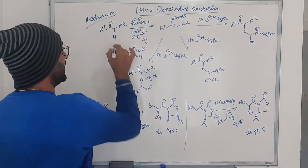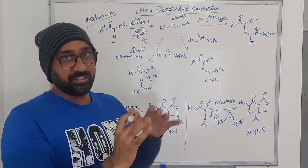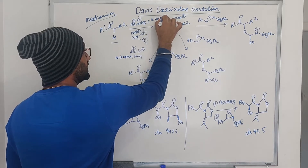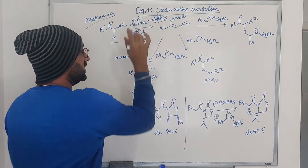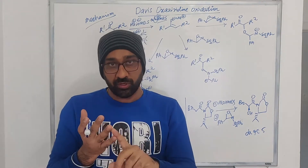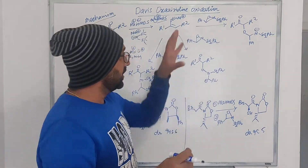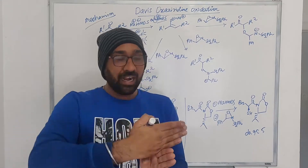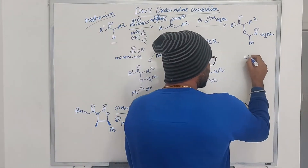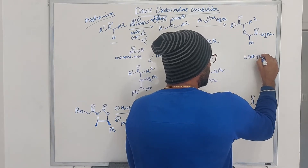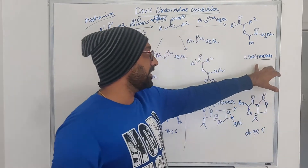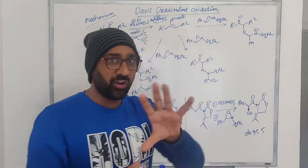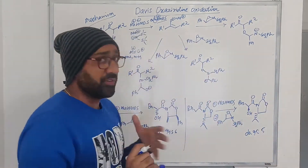Let us take a general ketone. If you are using NHMDS or KHMDS as the base, remember the countercations — sodium and potassium are generally very important countercations for the alpha hydroxylation. If you are using LDA, then in those cases you will use an additive so that it coordinates the lithium ion. Otherwise, you will not see the lithium countercation and you will see a different outcome. The base abstracts the alpha proton to form the enolate.